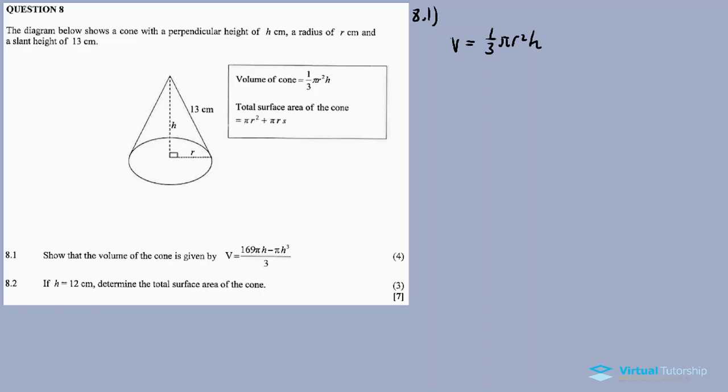So we use the theorem of Pythagoras to calculate or express R in terms of H. Since this is a right-angle triangle, 13 squared is equal to H squared plus R squared. Then we transpose H, so R squared equals something like this: R squared equal to 169, which is 13 squared, and then the H squared is transposed to the left-hand side, so 169 minus H squared.